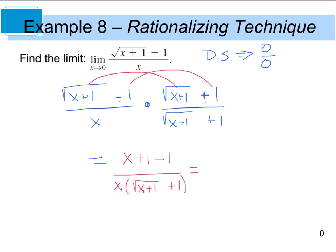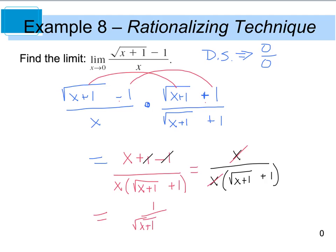And if we simplify, the x plus 1 and negative 1 cancel out, leaving x in the numerator. So now we're left with x divided by x times the quantity of the square root of x plus 1 plus 1. I have a common factor of x in both numerator and denominator. So this gives me 1 divided by the square root of x plus 1 plus 1, and I now have a simplified function.